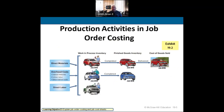In job order costing, we still focus on direct materials, overhead, and direct labor, but we apply them to each specific job. For example, if we're painting three different cars, we know job B15 is done once it's painted. One car is sold, one is complete but not yet sold, and one is still in process. We can know exactly where we are on each job at any given point — that's the key purpose of job order costing.